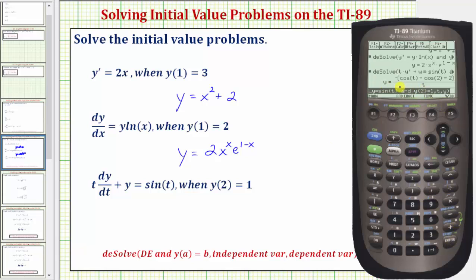So looking at the particular solution we could distribute the negative to eliminate the parenthesis in the numerator which would give us y equals 2 plus cosine 2 minus cosine t all over t. Let's go ahead and enter it in that form.